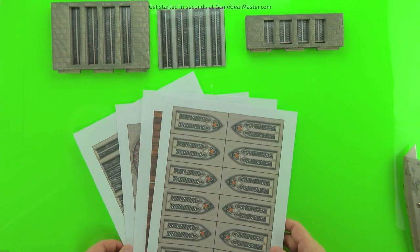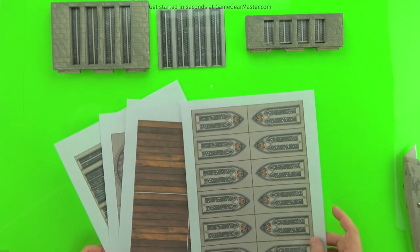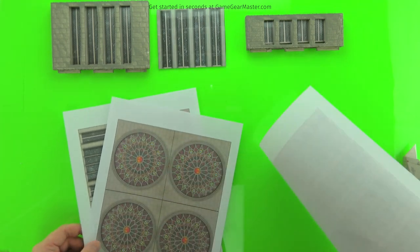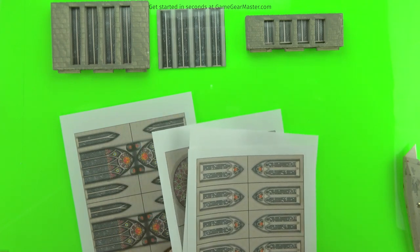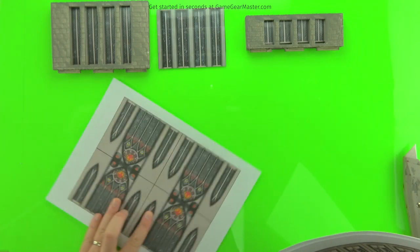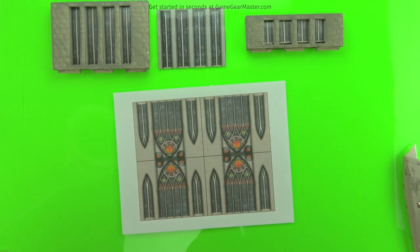So there might be situations where you'll find a printout in the Terraino Castles and Catacombs manual, or maybe other places. I might be releasing other stuff. And you may want to convert it from a double height printout to a single height printout. That's really easy to do.